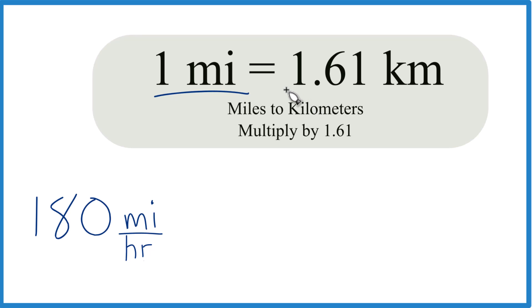One mile equals 1.61 kilometers. If you want more decimal places, you could go 1.60934, and some people just use 1.6. But we're going to use 1.61. When we go from miles to kilometers, we multiply by 1.61.